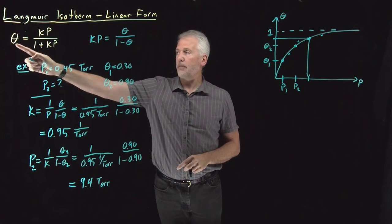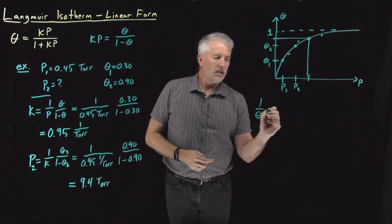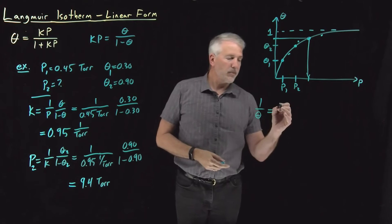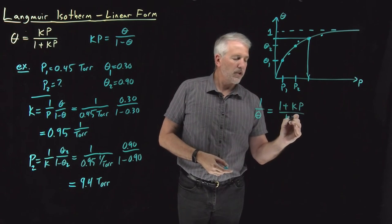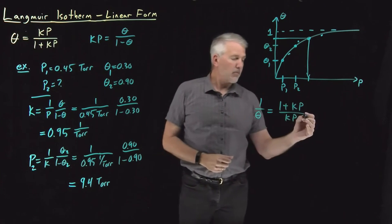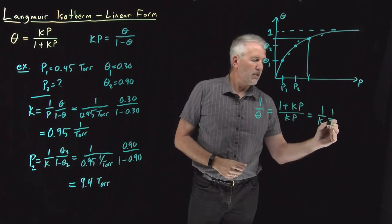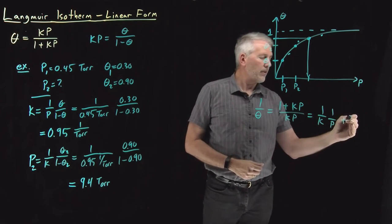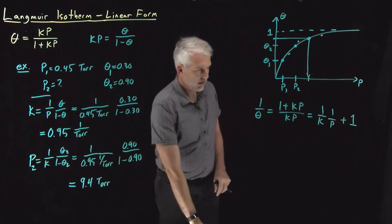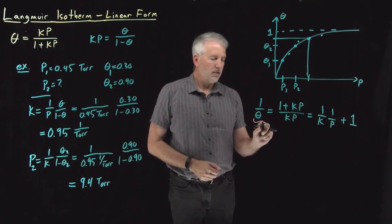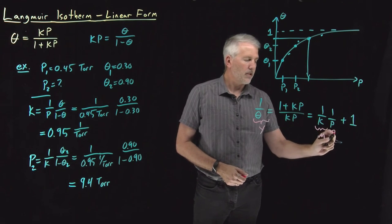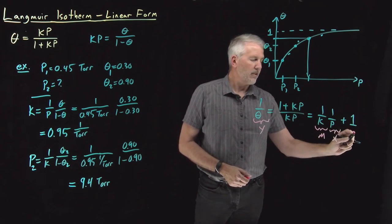Instead of talking about how theta depends on pressure, let me write down one over theta. So if I take the inverse of the left side, taking the inverse of the right side gives me one plus kp over kp. Now that I've got the sum in the numerator instead of in the denominator, I can break that up into one over kp. And then kp over kp is just one. So one over theta is equal to one over kp plus one.